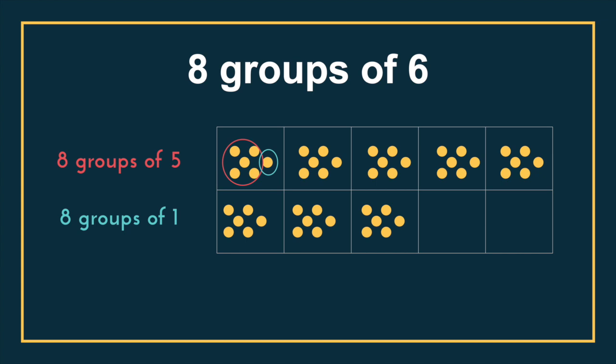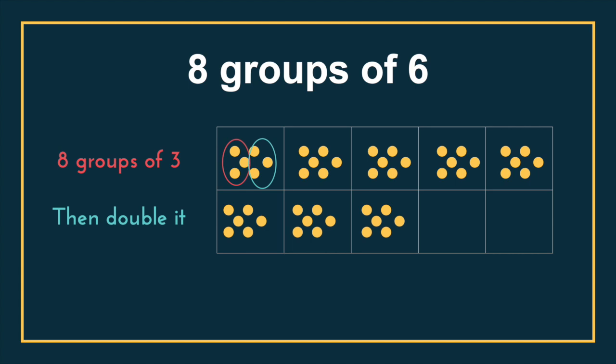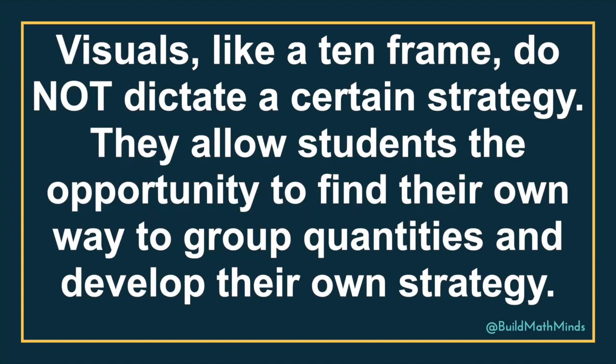Kids looking at breaking apart the amount in each group might see 8 groups of 3 — they see 3 and then double it because there's another group of 3 in every single one of those. So these visuals do not dictate a certain strategy, even a 10 frame. There's no one right way to use it. They allow students the opportunity to find their own way to group the quantities and develop their own strategy, as long as we step out of the way and let them.